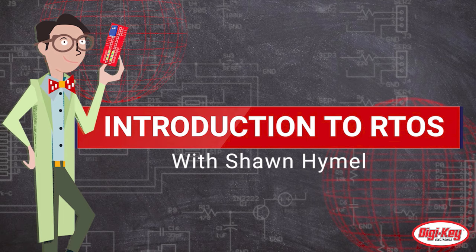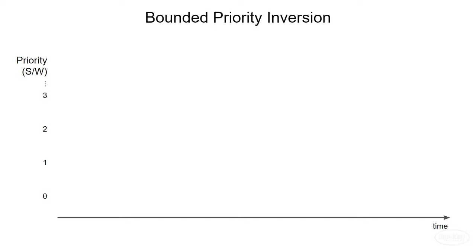JPL engineers eventually discovered that these random resets were being caused by a watchdog timer, and this watchdog timer was being triggered by an infrequent and insidious bug known as priority inversion. Let's take a look at how priority inversion occurs and what we can do to fix it, starting with a relatively simple example.